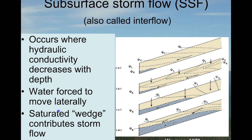To summarize: subsurface storm flow, sometimes called interflow, occurs where hydraulic conductivity decreases with depth, which is incredibly common in many landscapes. This decrease in hydraulic conductivity forces water to move downslope laterally and develops a transient saturated wedge that is released into the stream during storm flow and for some period of time after the end of rainfall.